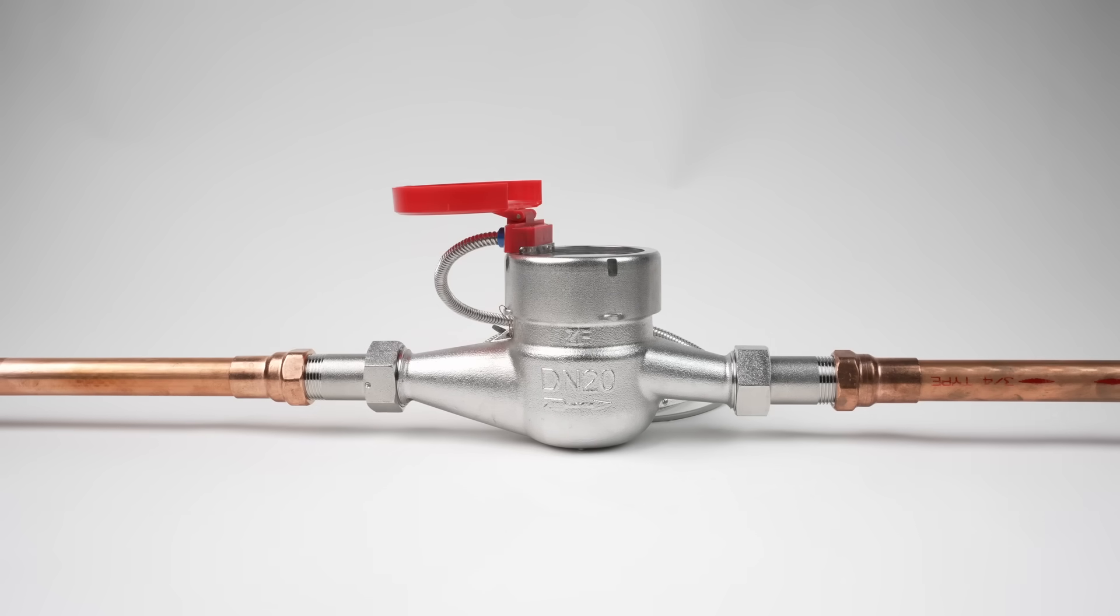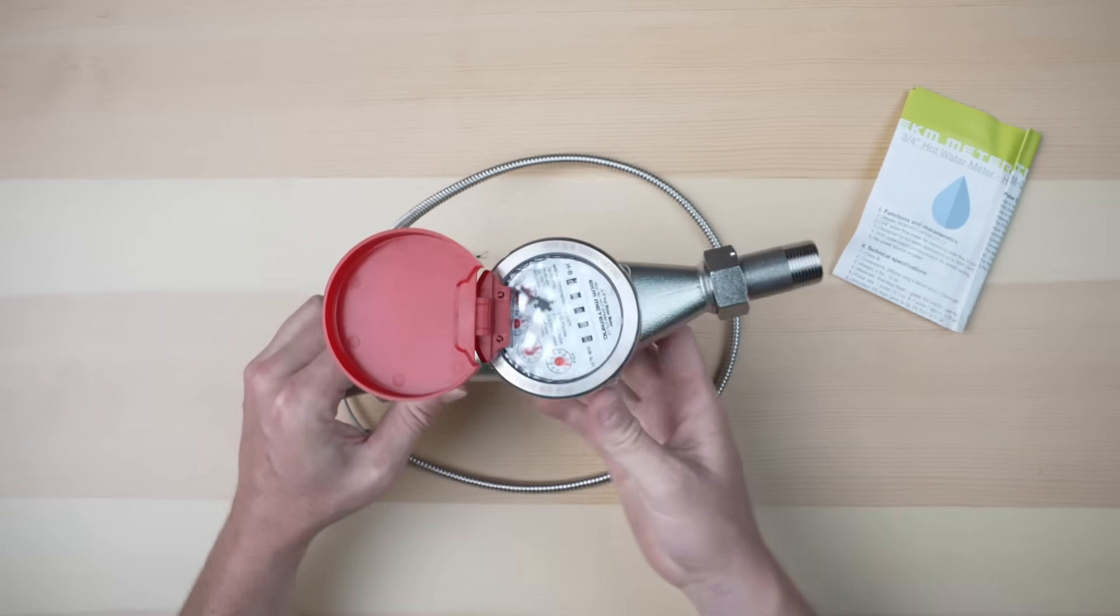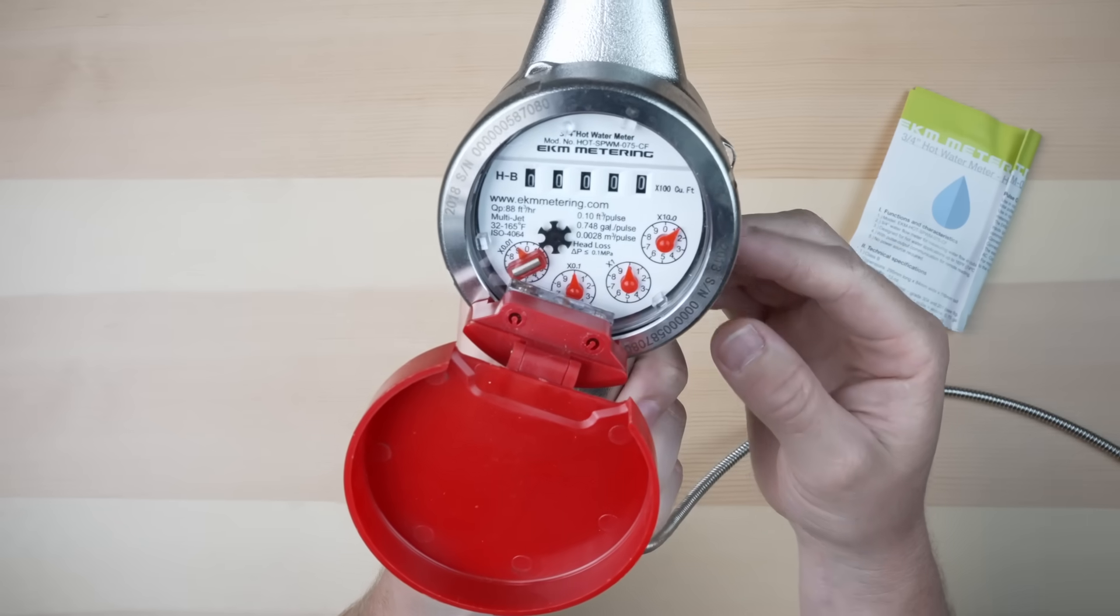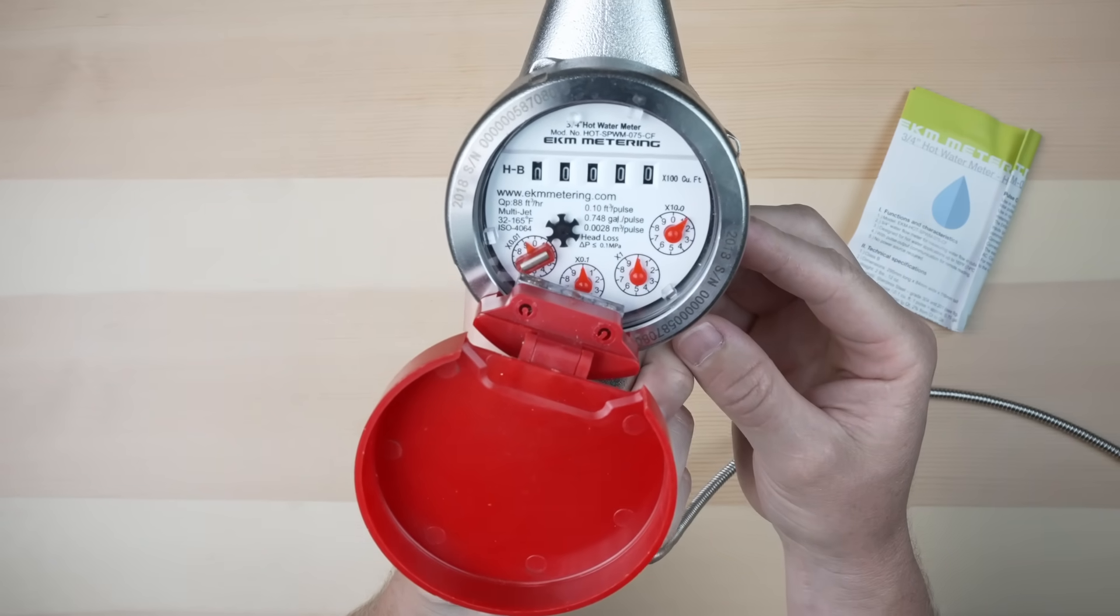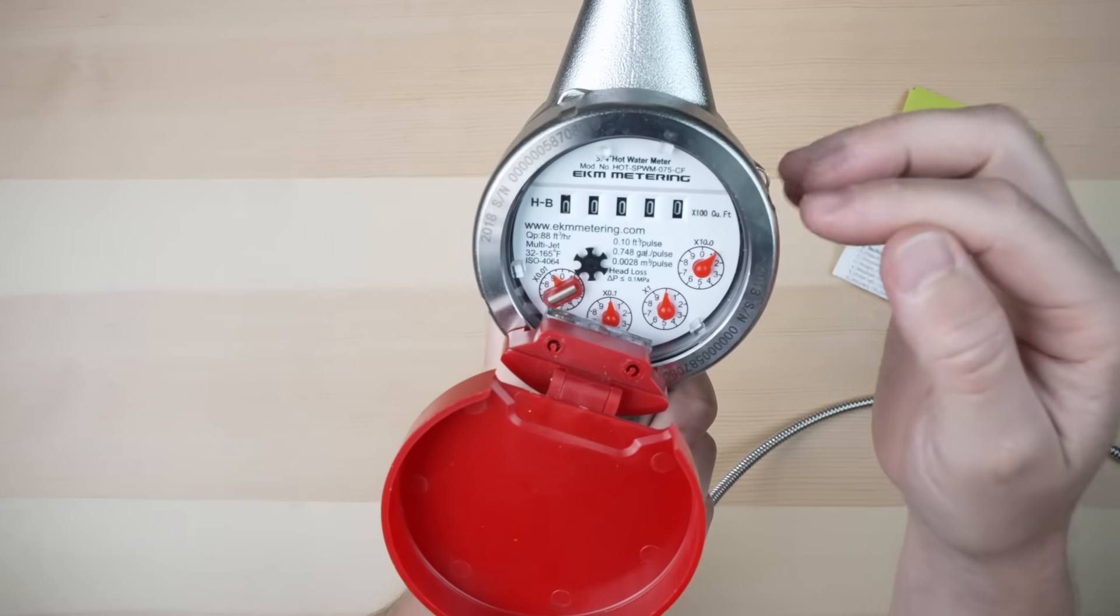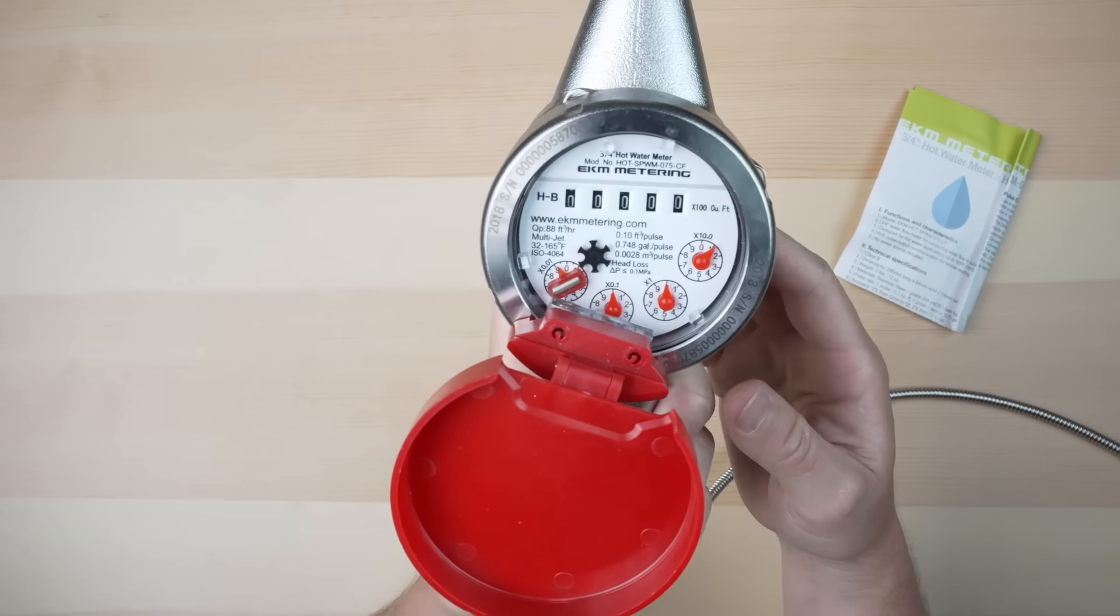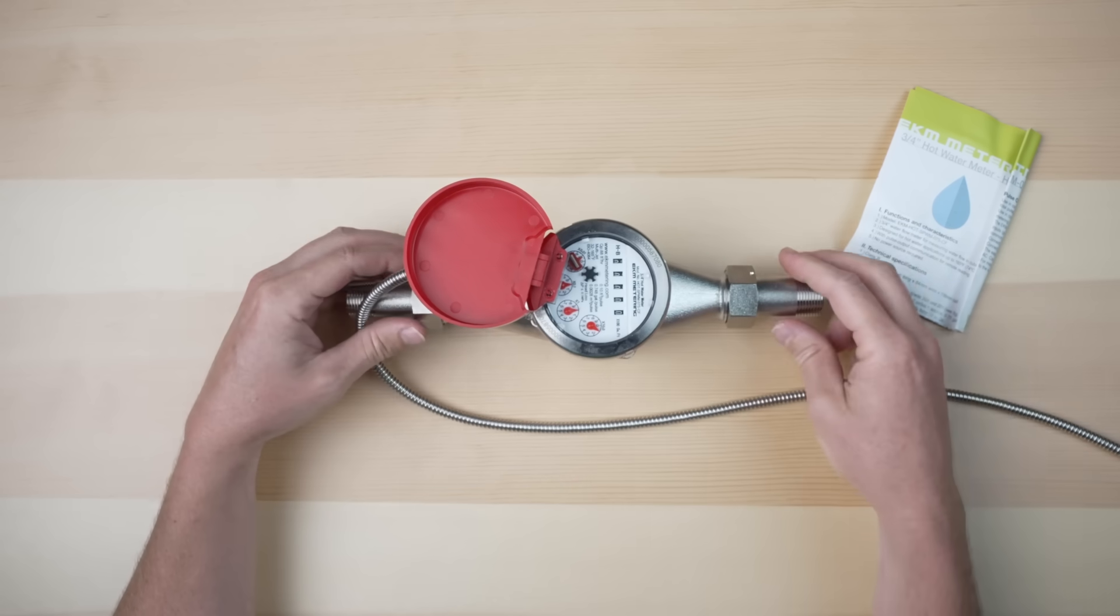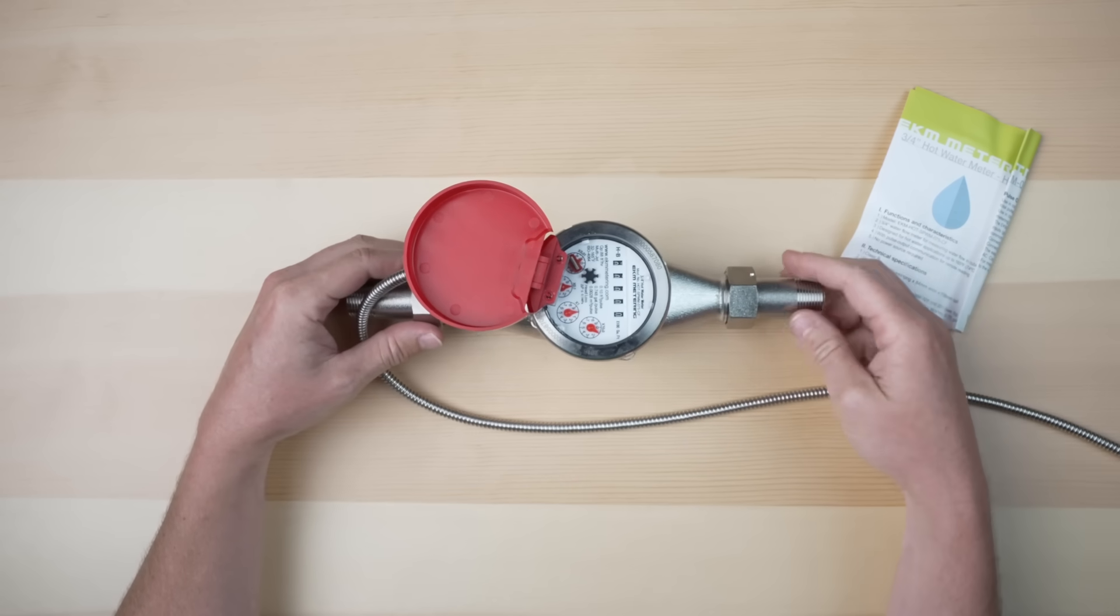The meter reads natively in cubic feet. I can hold it up here to show you the dials. Across the top here are increments of 100 cubic feet. So any number that displays there, you multiply by 100 to calculate the amount of cubic feet. The meter will read 10 million cubic feet before the dials roll back over to zero.